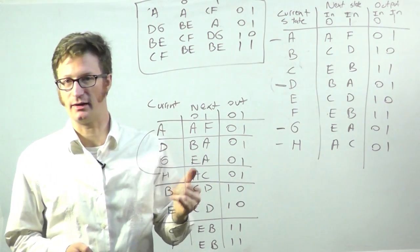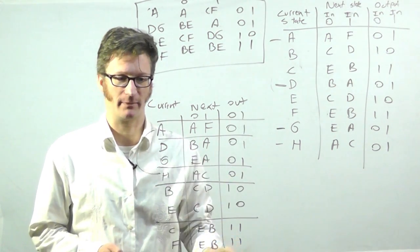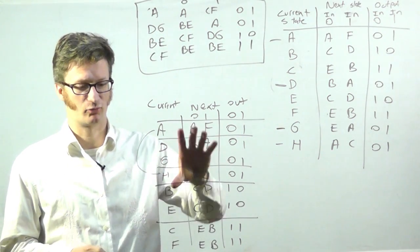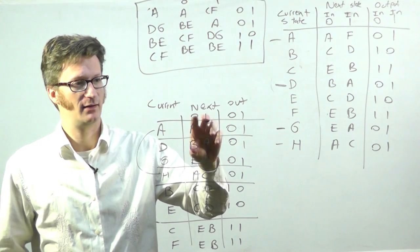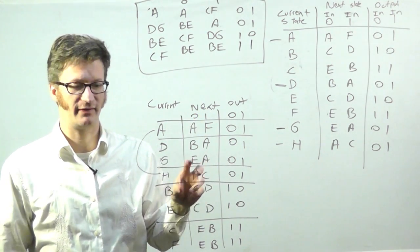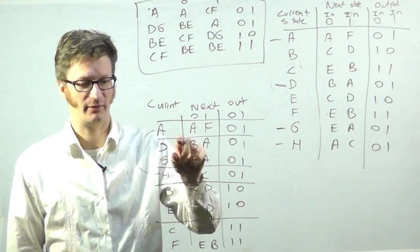So that is a way that you can do state reduction. So what I did was I sorted it first by output, by identical output. Then I looked at each group and I said, for the given inputs, do they jump to the same groups? And if they don't, then separate them out from the others.